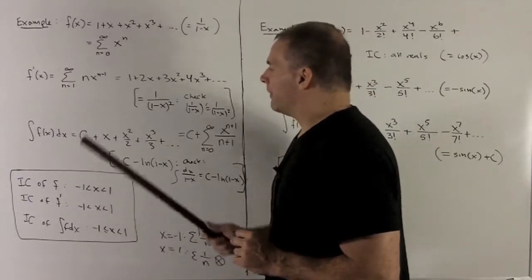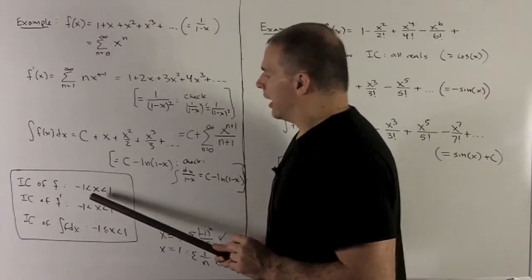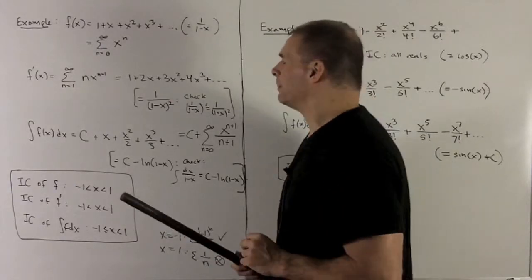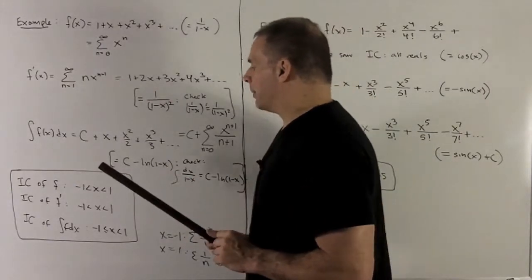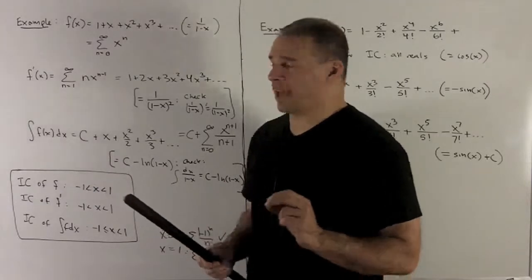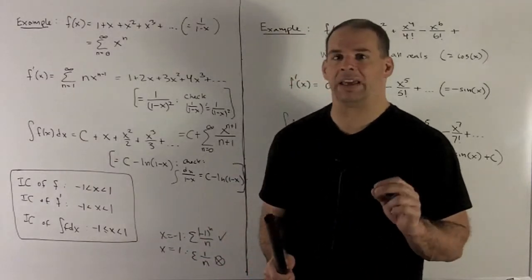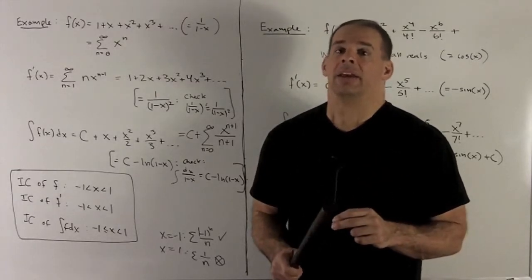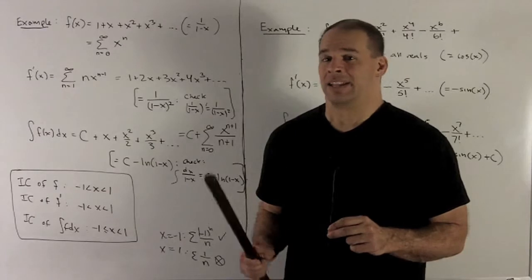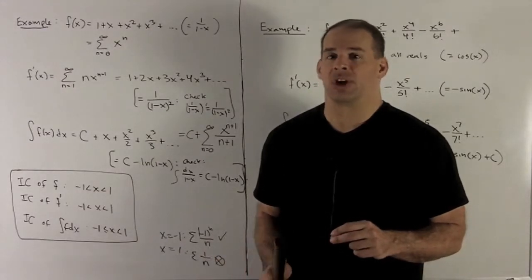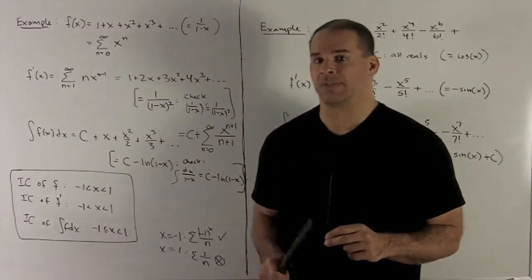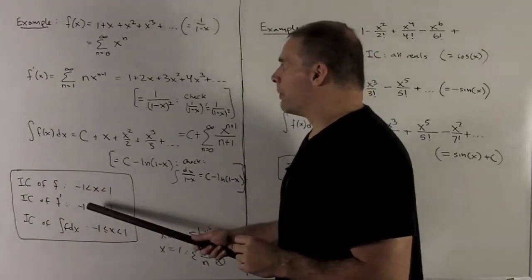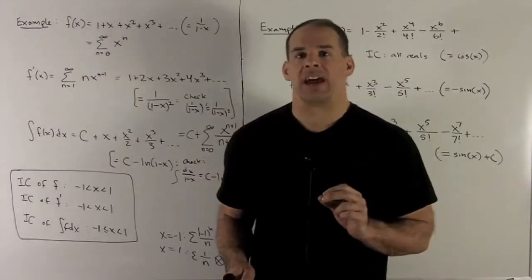How about the derivative? The open interval will be the same, going from minus 1 to 1, and then we check the endpoints again. If I put a 1 in here, we're looking at the sum from n equals 1 to infinity of n. We can use the limit test for divergence: the limit as n goes to infinity of n is plus infinity — that's not 0 — so the series is not convergent. If I go with minus 1, same idea; that also diverges.